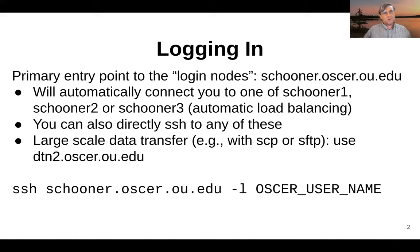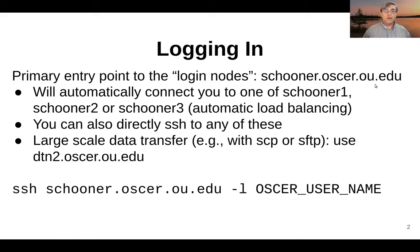There are some scenarios where it makes sense to circumvent that load balancing process. You are also able to SSH into the individual schooner one, two, or three. If you're doing large-scale data transfers, don't use schooner to make that happen, but instead handle those through dtn2.oscar.ou.edu. Those are typically done with SCP, SFTP, or RSync, or something along those lines.